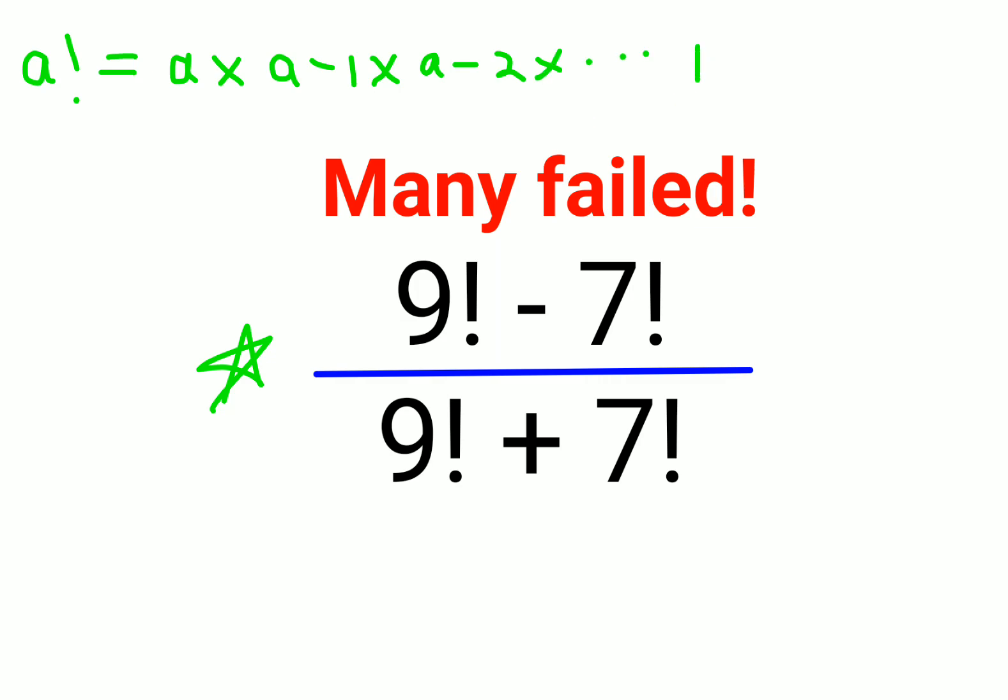For example, if you wanted to take 3 factorial, 3 factorial will be 3 into 2 into 1, and if I wanted 4 factorial, that would be 4 into 3 into 2 into 1. Now if you look closely, I can write 4 into this entire thing equals this thing. So instead of 3 into 2 into 1, I can concisely write this as 3 factorial.